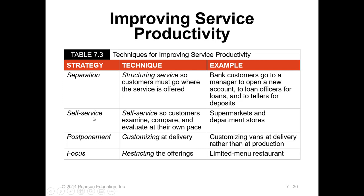Another strategy is self-service — customers examine, compare, and evaluate by themselves. Supermarkets and departmental stores are examples of self-service. McDonald's introduced the self-service concept, empowering customers to evaluate, compare, and decide. Then we have postponement — customizing at delivery rather than at production, delivering the customized product to your doorstep rather than making it in production.